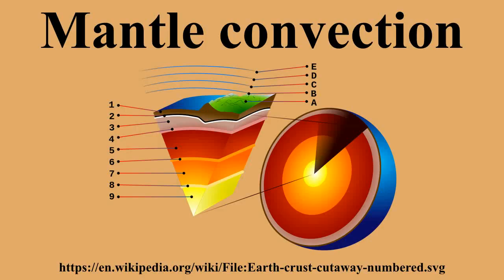Mantle convection seems to have been much more active during the Hadean period, resulting in gravitational sorting of heavier molten iron, nickel elements, and sulfides into the core, and lighter silicate minerals into the mantle.